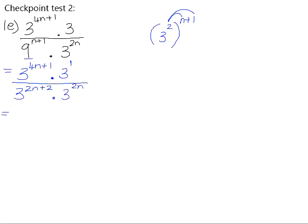We can now simplify by multiplying and dividing the powers that have the same base. When you multiply powers with the same base, you add the exponents, so we will add the positive 1. We will subtract the 2n plus 2, because when you divide powers with the same base, you subtract exponents, and then minus the 2n.